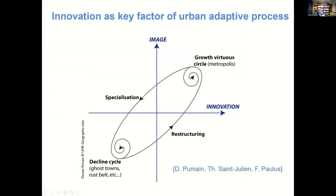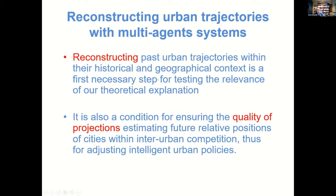We have a theory of an innovation flow that is partly created within cities and develops them. If cities adapt continuously to this flow, they become metropolises, but they may over-specialize and enter a cycle of decline with the activities they host. Of course, restructuring is always possible but sometimes difficult. The challenge was to try to reconstruct, with a multi-agent system, those differentiated urban trajectories in order to assess the validity of our theoretical hypotheses and ensure the quality of possible future predictions.